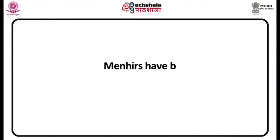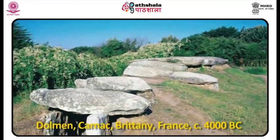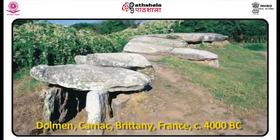Menhirs, from two Celtic words — 'man' meaning stone and 'hir' meaning long — are unworked, slightly shaped single stones, or monoliths, erected either together or individually. Menhirs have been interpreted as representing phallic fertilizers of Mother Earth. Dolmens, from the Celtic word 'dol' meaning table, are chambers or enclosures consisting of two or more vertical stones supporting a large single stone.